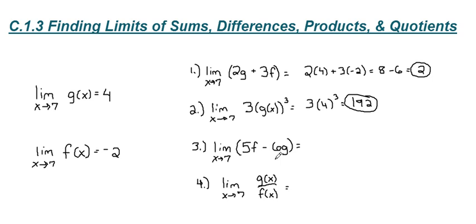For number 3, we have a difference. We're first going to multiply 5 times the value of the limit as we approach f, so it would be 5 times negative 2. Then we subtract 6 times 4. That gives us negative 10 minus 24. Negative 10 minus 24 is negative 34.